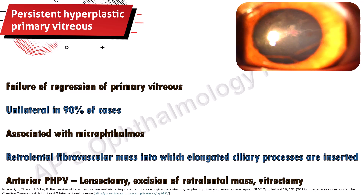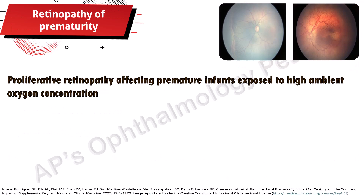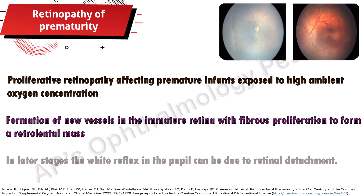Retinopathy of prematurity is a proliferative retinopathy affecting premature infants exposed to high ambient oxygen concentration. Leukochorea is due to the formation of new vessels in the immature retina with fibrous proliferation to form a retrolental mass. In later stages, the white reflex in the pupil can be due to retinal detachment.